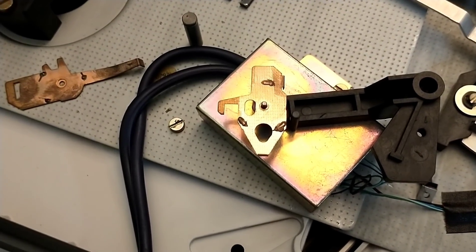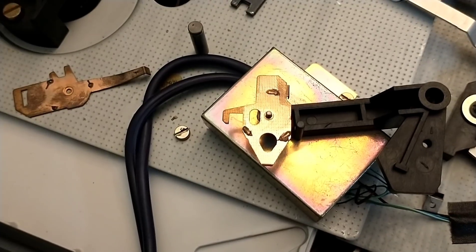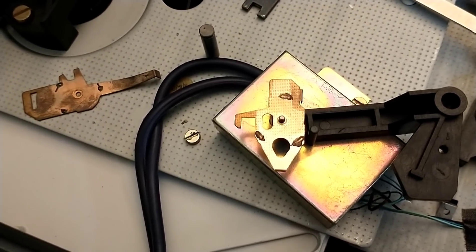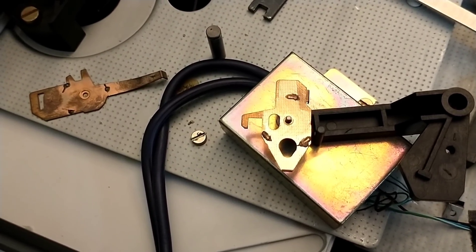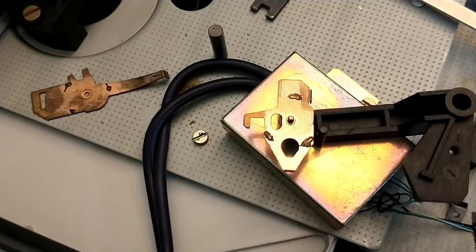Regardless of model, don't ever spin a Dual counterclockwise. You will break things. Other turntables have one-way clutches and things that prevent this. The Duals do not and you will break things. Don't do that.